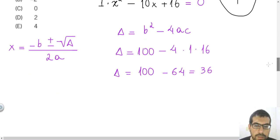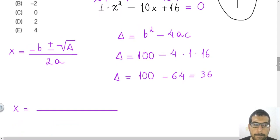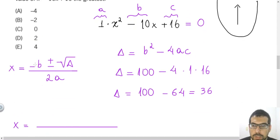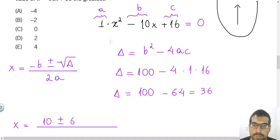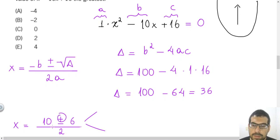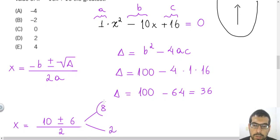Since delta is 36, the roots are: minus B is minus minus 10, which equals 10, plus or minus the square root of 36, which is 6, all divided by 2 times A (which is 1), so divided by 2. Taking the plus sign: 10 plus 6 is 16 over 2, which is 8. Taking the minus sign: 10 minus 6 is 4 over 2, which is 2. So the roots are 2 and 8.